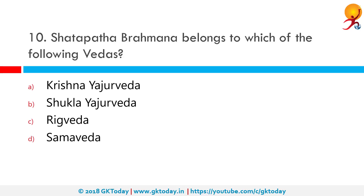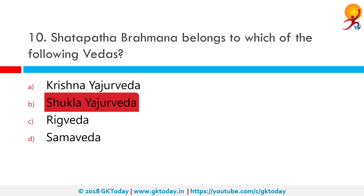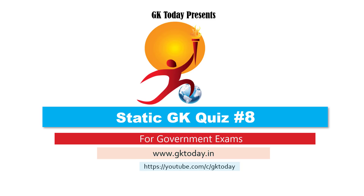Shatapatha Brahmana belongs to which of the following Vedas? Shatapatha Brahmana is a prose text describing Vedic rituals, history, and mythology associated with the Shukla Yajurveda. The correct answer is Shukla Yajurveda. That's all for today's quiz — until the next video, goodbye!